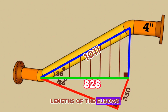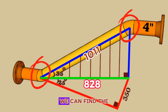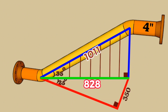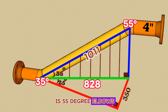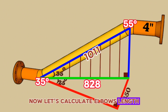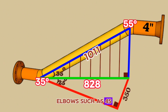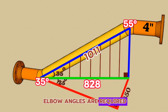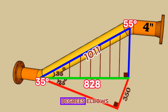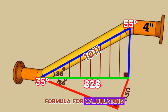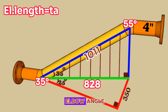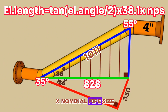If we subtract the lengths of the elbows and the gaps for welding from this total length, we can find the length of the yellow pipe section. Two different size elbows are used in this pipeline — one at 35 degrees and the other at 55 degrees. For standard degrees of pipe elbows such as 45 degrees and 90 degrees, elbow center-to-end dimensions are available in standard pipe charts. But many times, custom elbow angles are required at site, which should be cut from standard 45-degree or 90-degree elbows. The formula for calculating center-to-end distance of such elbows is: elbow length equals tangent (elbow angle / 2) × 38.1 × nominal pipe size.